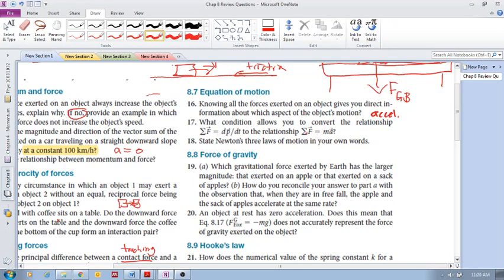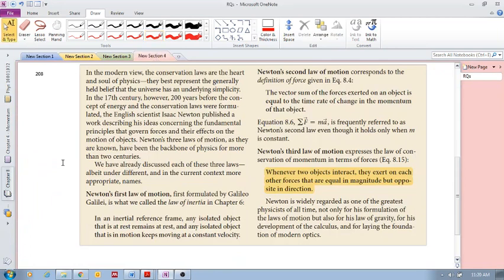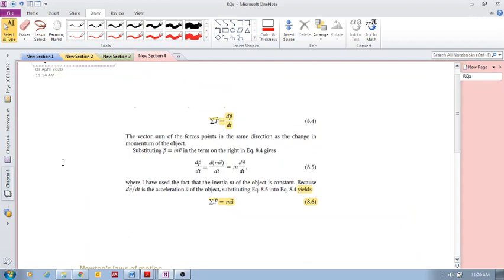What is the condition? Well let's have a look here. So we know that the time rate of change of the momentum of an object is equal to the sum of the forces acting on that object. The way that we can convert this to this more familiar one, sum of the forces equals ma, is because we assume that the inertia of the object is constant.